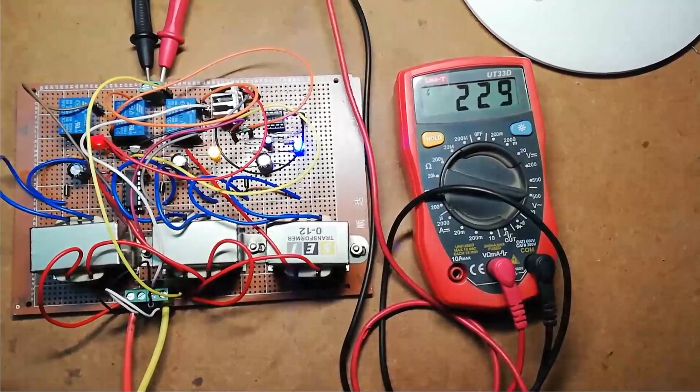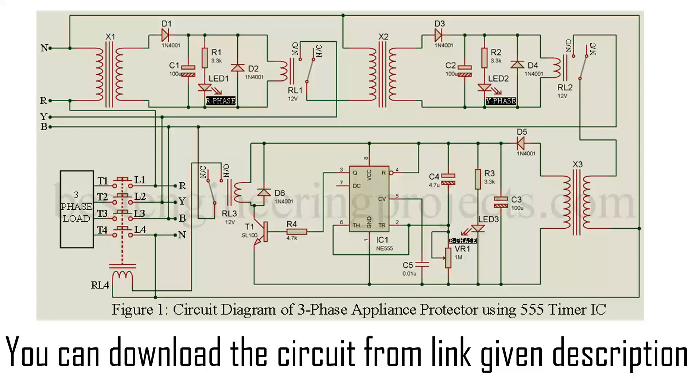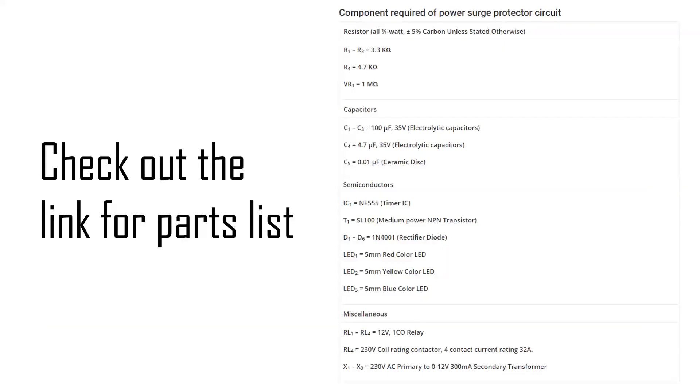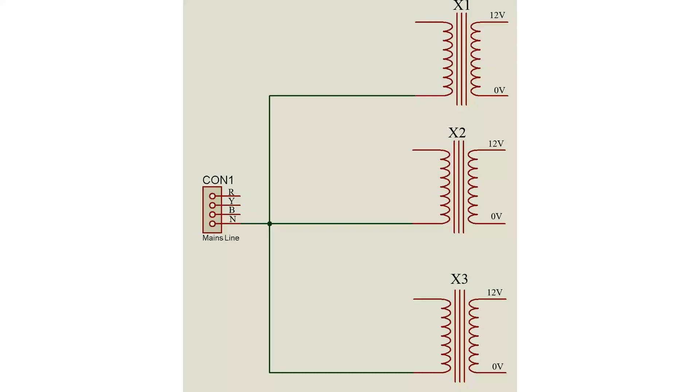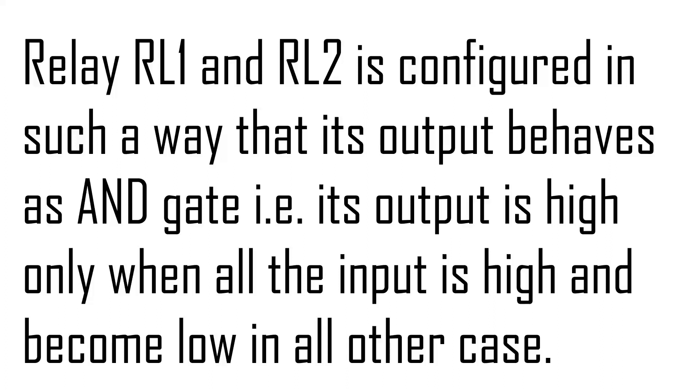Now let's see the circuit diagram and component required for this project. From circuit diagram and component required, we conclude that this circuit utilize three transformers and three delay, one for each phase. One terminal of each primary winding of transformer is connected to neutral of main supply, where other terminal of each transformer primary winding is connected to each phase of main supply through relay. Relay RL1 and RL2 is configured in such a way that its output behave as AND gate, that is, its output is high only when all the input is high and become low in all other cases.